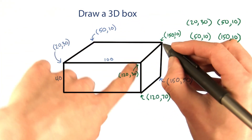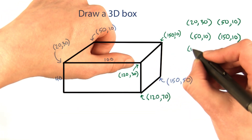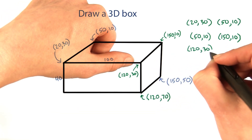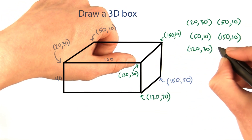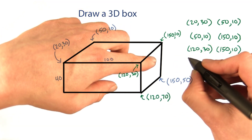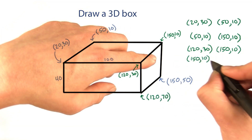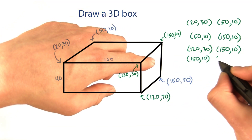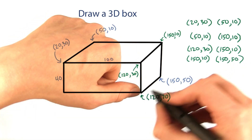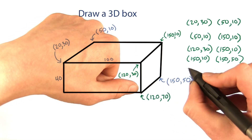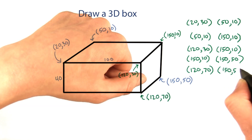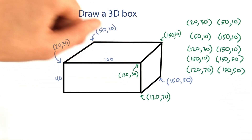This line is 120, 30 to 150, 10. This line is 150, 10 to 150, 50. And this line is 120, 70 to 150, 50.